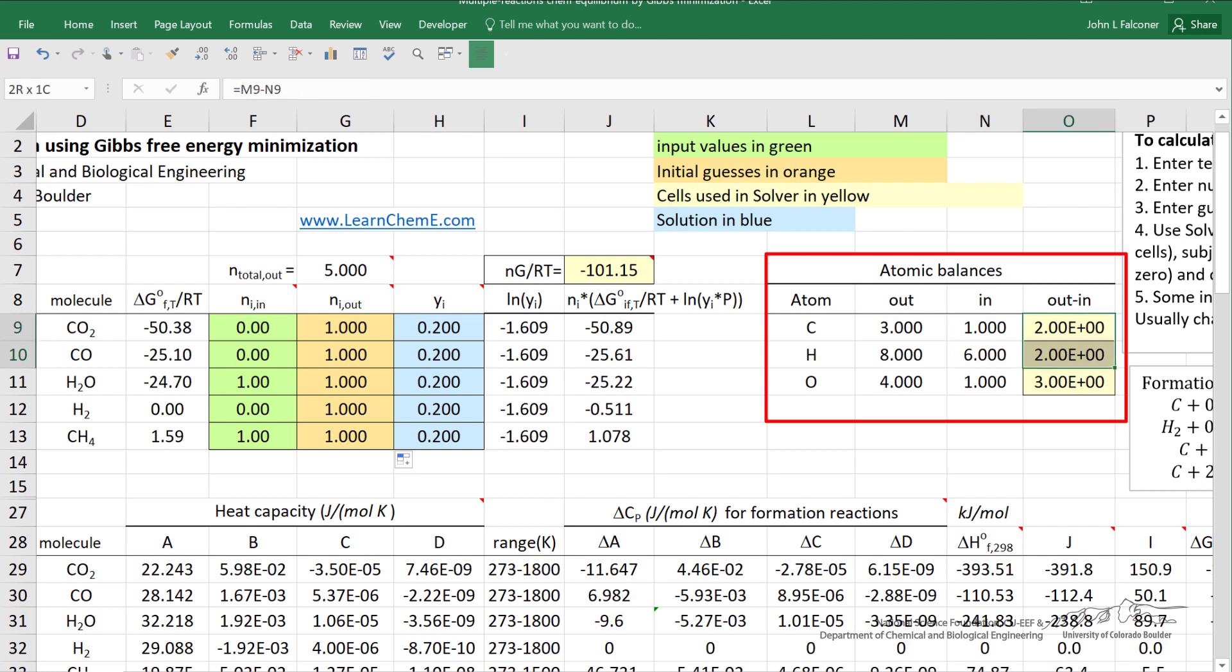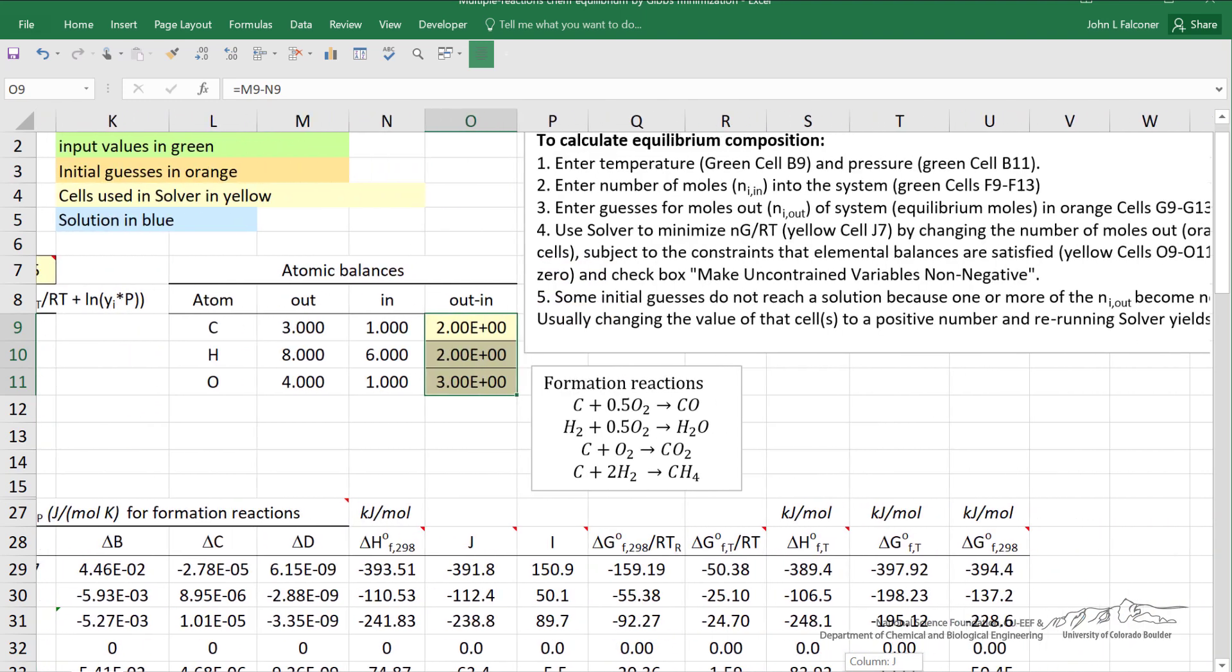This is the difference. This is what we want to get as close to zero as possible when we solve to minimize the Gibbs free energy. So the spreadsheet has, as you see on the right, details explaining how to use the spreadsheet.